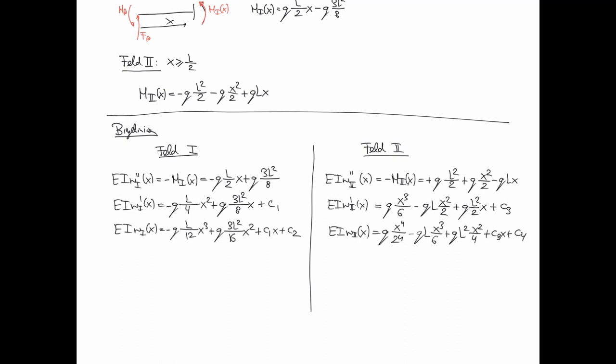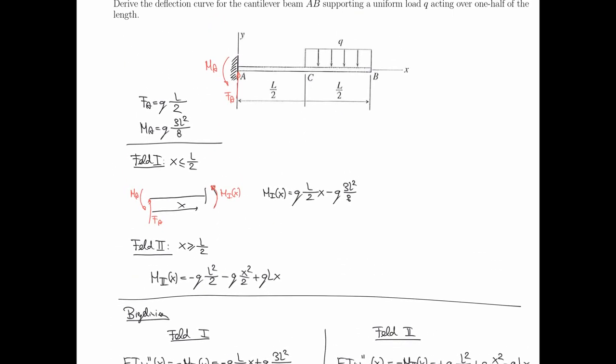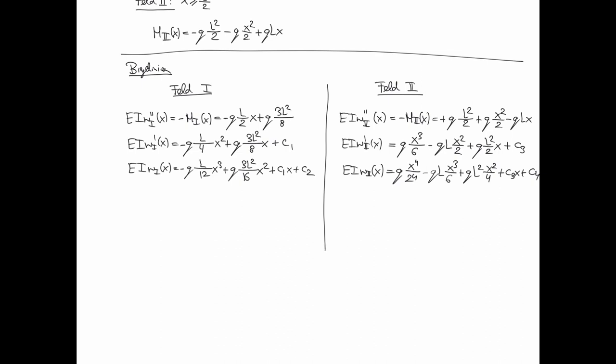Jetzt haben wir wieder vier Konstanten und randbedingungsmäßig geht jetzt folgendes. Links eingespannt bedeutet Steigung und Durchbiegung links 0. Also für die linke Seite haben wir zwei volle Randbedingungen zur Bestimmung von C1 und C2. W1 von 0 ist 0 und W1 Strich von 0 ist 0. Daraus folgt nämlich, dass sowohl C2 0 ist, als auch C1 0 ist. Das war einmal einfach.